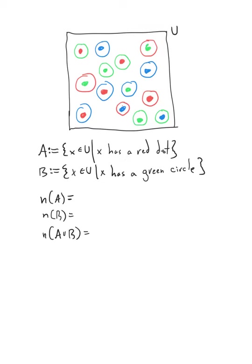Let's count it. The ones with the red dots: I can see one, two, three, four, five — and I think that's it. So the cardinality of set A is five. There are five objects in our universe that have a red dot.